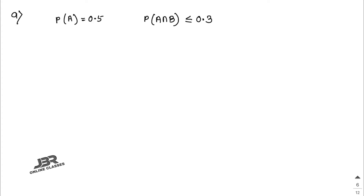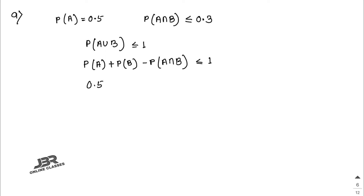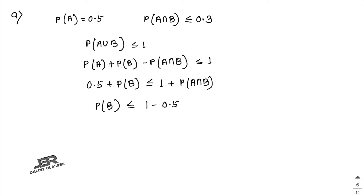We write P(A ∪ B) ≤ 1, so P(A) + P(B) − P(A ∩ B) ≤ 1. With P(A) = 0.5: 0.5 + P(B) − P(A ∩ B) ≤ 1, so P(B) ≤ 1 − 0.5 + P(A ∩ B) ≤ 0.5 + 0.3 = 0.8. Since 0.7 ≤ 0.8, P(B) = 0.7 is logically valid.